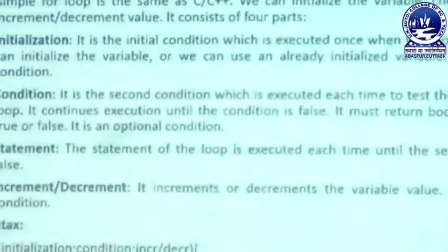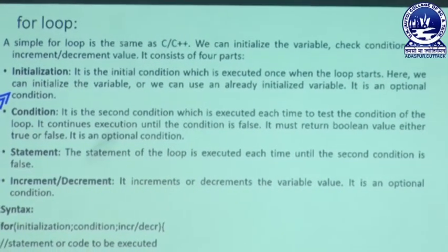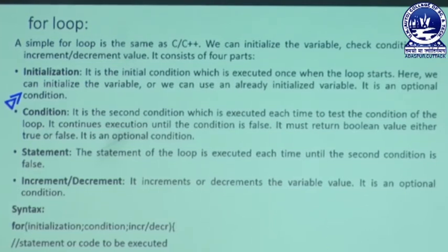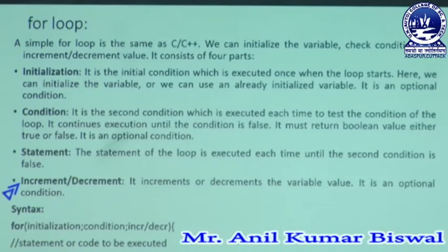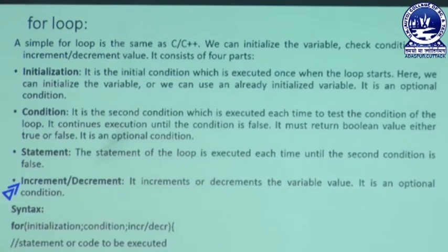Let us focus on the parts of for-loop. First, the initialization section is used to assign some value to a specific variable, and that variable must be used in the condition. Second, the condition section is the second part of your for-loop — with it, we test the looping statement and flow movement. Third, the statement block contains what should be executed inside the for-loop. Finally, we have the increment or decrement part, by which we increment the variable for the next execution.